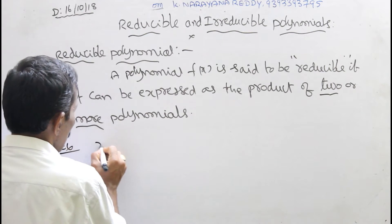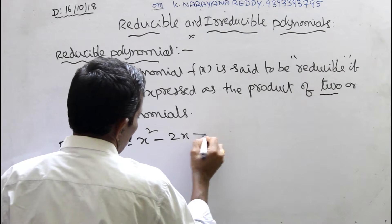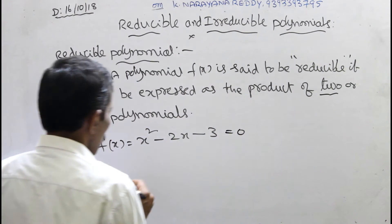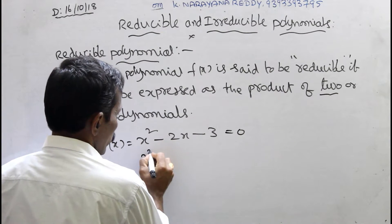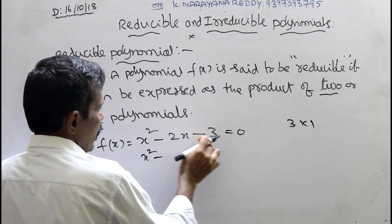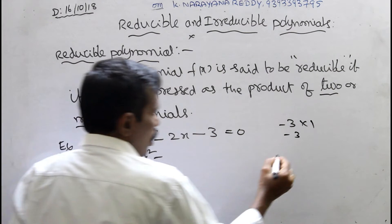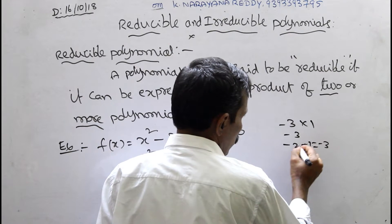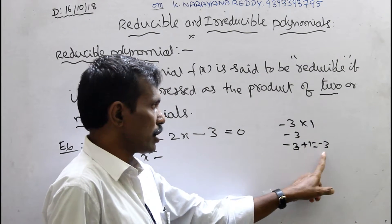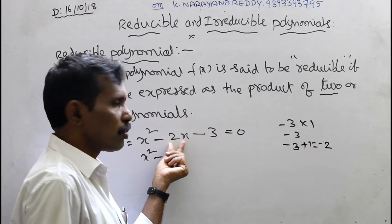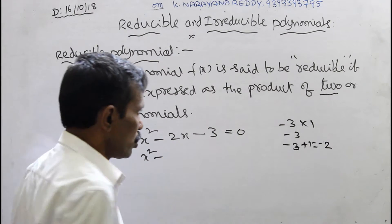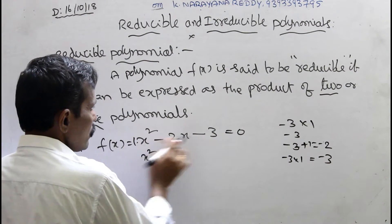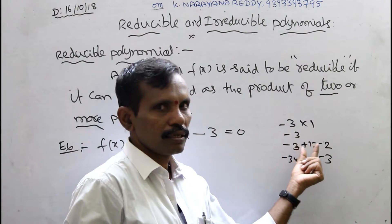Example: f of x equals x squared minus 2x minus 3. For this quadratic polynomial, we factorize: 3 times 1 equals 3, and minus 3 plus 1 equals minus 2, which matches the middle term. So multiplication gives minus 3, and addition gives minus 2. In this way you can select the factors for this quadratic equation.